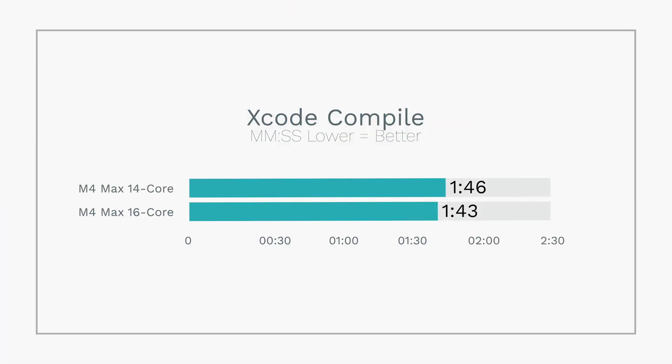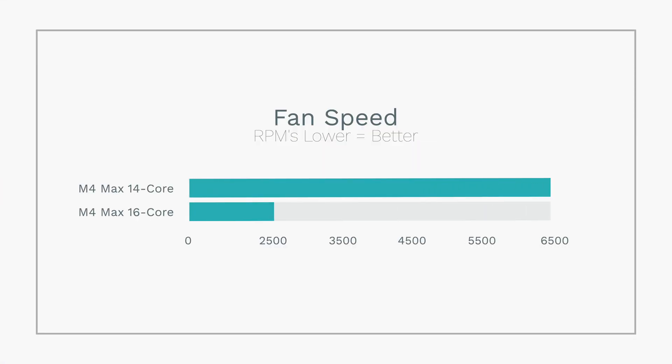Our Xcode benchmark is complete. The 14-core CPU compiled in 106 seconds — about 1 minute 46 seconds — versus 103 seconds on the 16-core. Worth noting: during the test we got significant fan spin-up on the 14-inch but not the 16-inch. The 16-inch stayed cooler, with fan RPMs only reaching around 2,600 to 3,000 — barely audible — whereas the 14-inch hit around 6,500 RPMs.